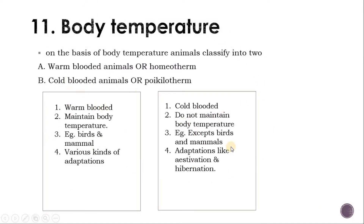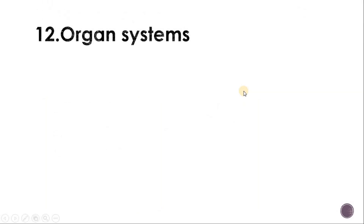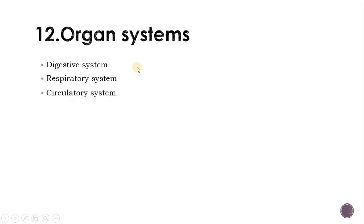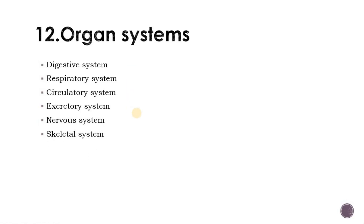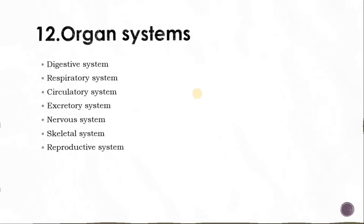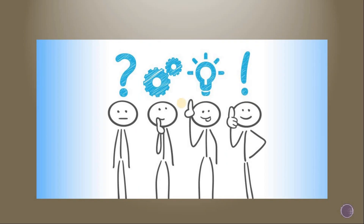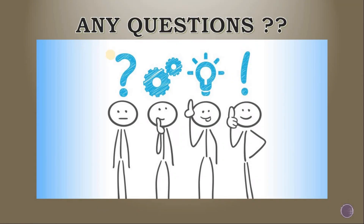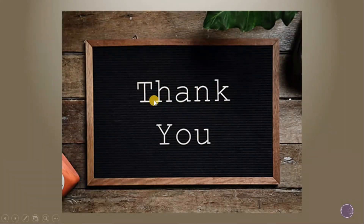On the basis of these parameters we can classify the animals. In the next session we will discuss organ systems: digestive system, respiratory system, circulatory system, excretory system, nervous system, skeletal system, and reproductive system. So stay tuned at Incredible Biology and stay learning at your home. If you have any questions, you can ask me in the comment box and through Google Classroom. Thank you.